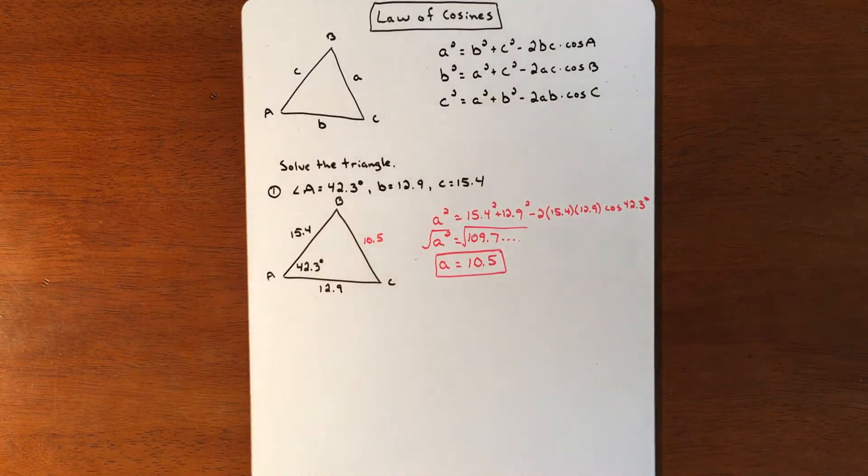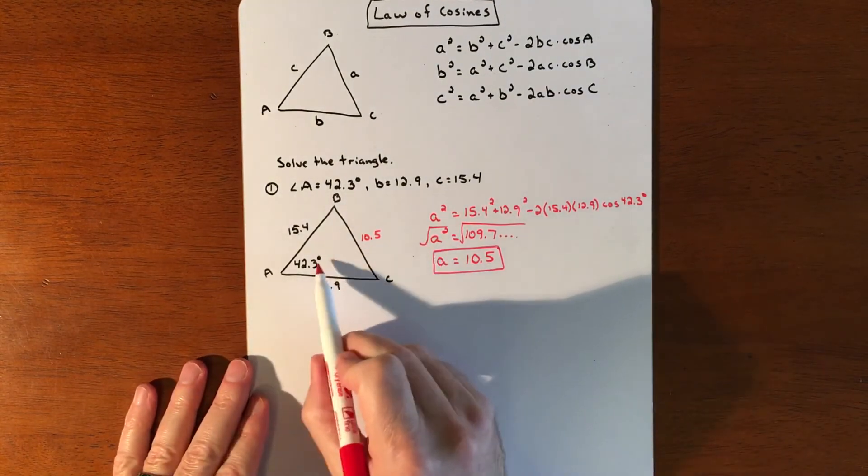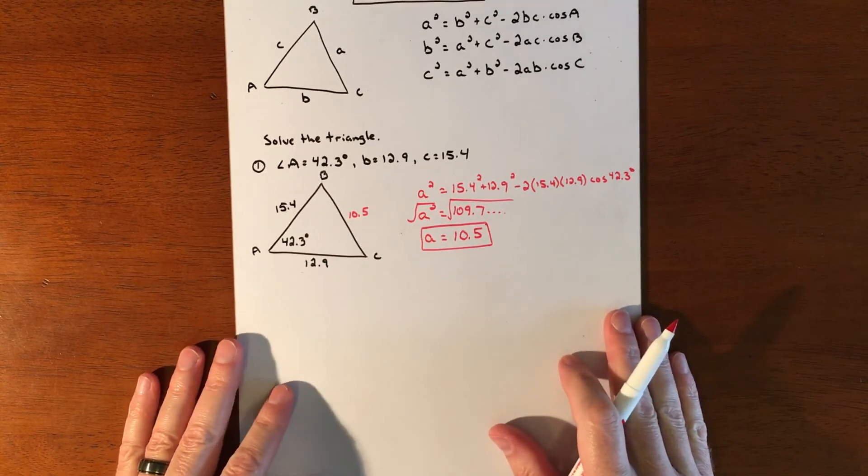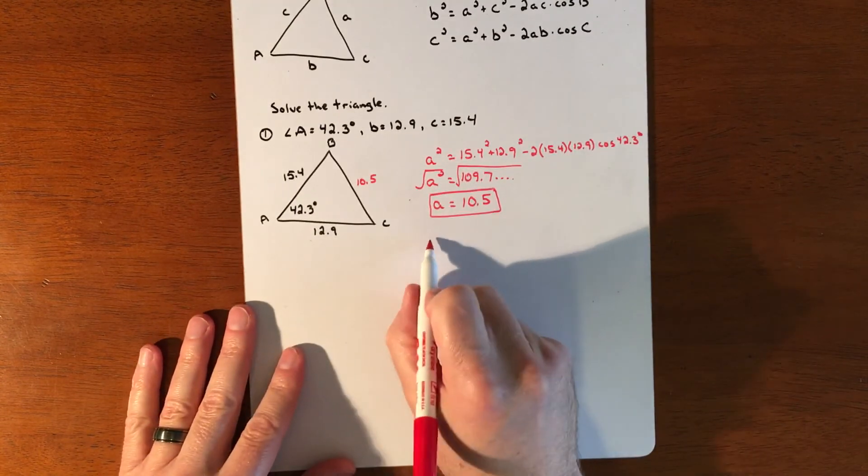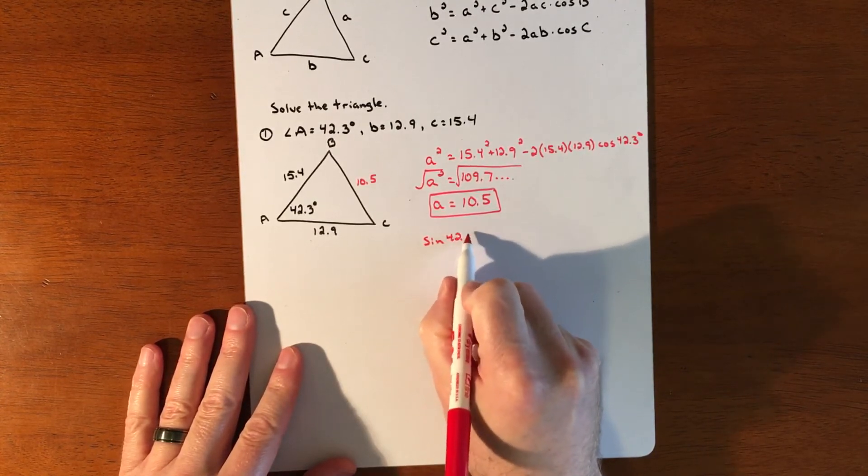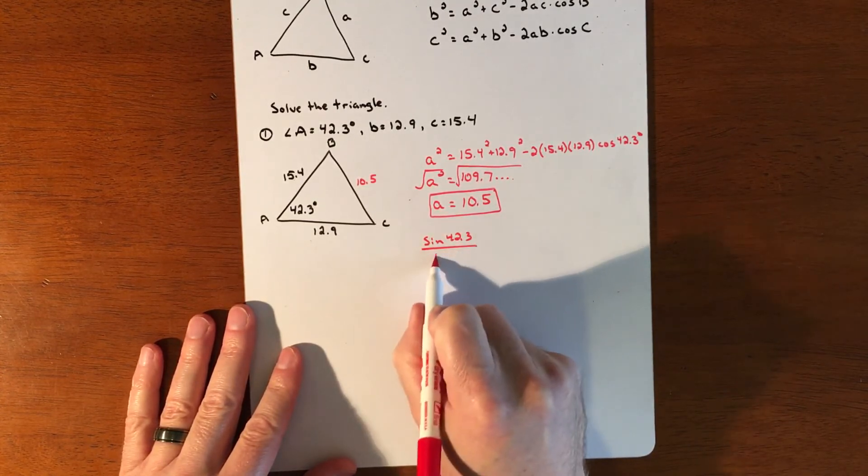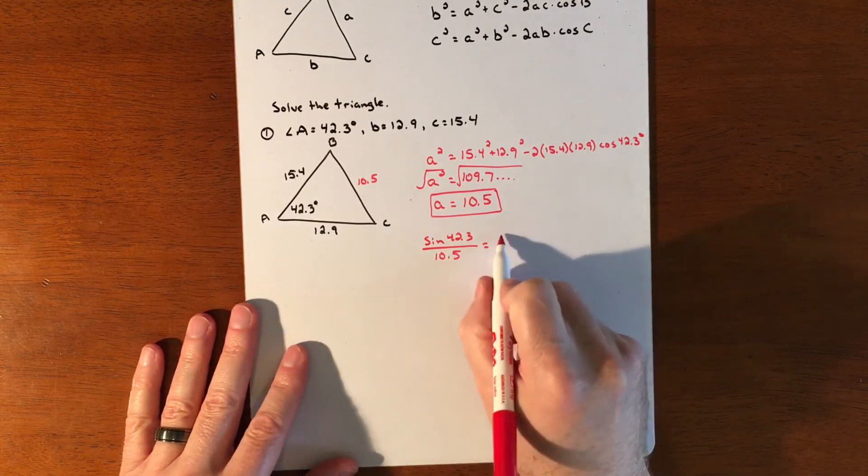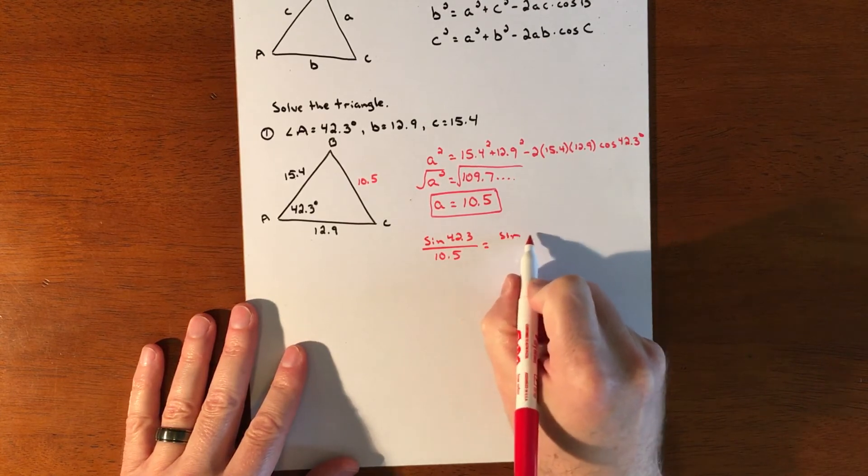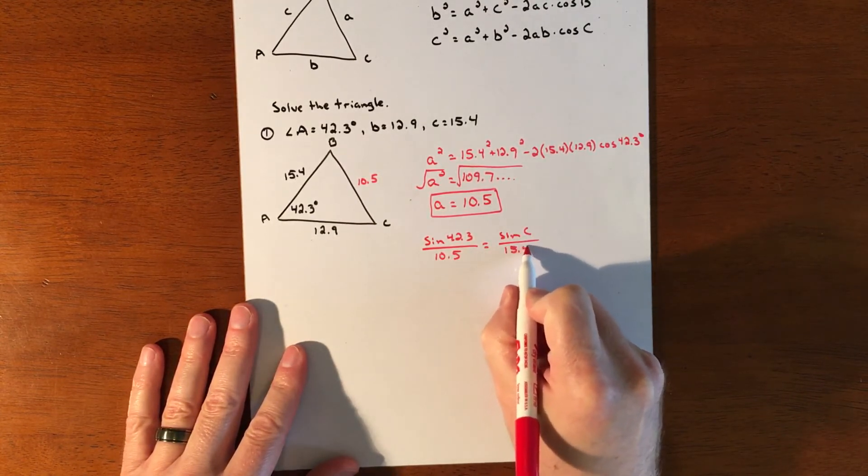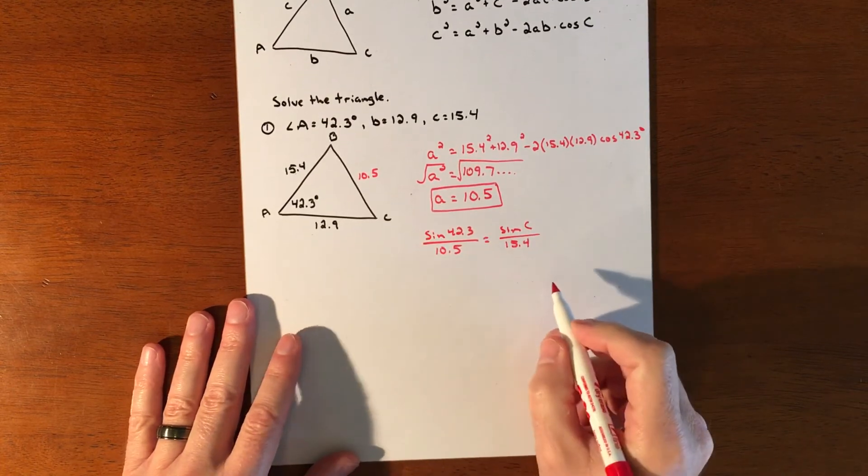Alright, so now once I have this, I actually have a Law of Sines situation. I can jump right into it because I now have an angle and a side across from each other. So I can do Law of Sines. I can do sine of 42.3 over 10.5, and then I can set it equal to a different one. Let's say we do sine of c over 15.4.